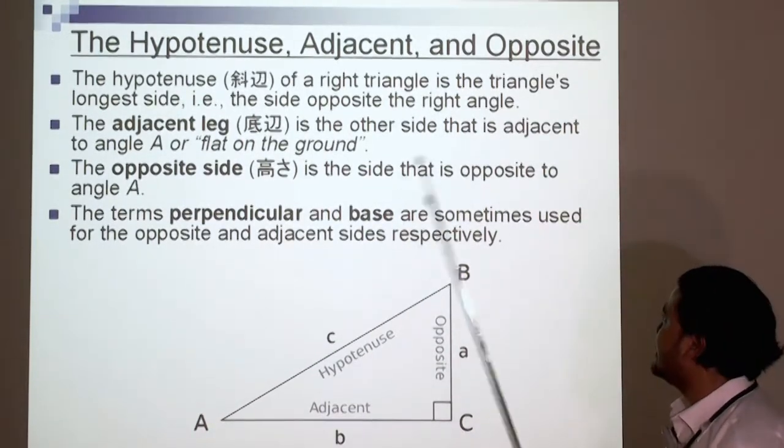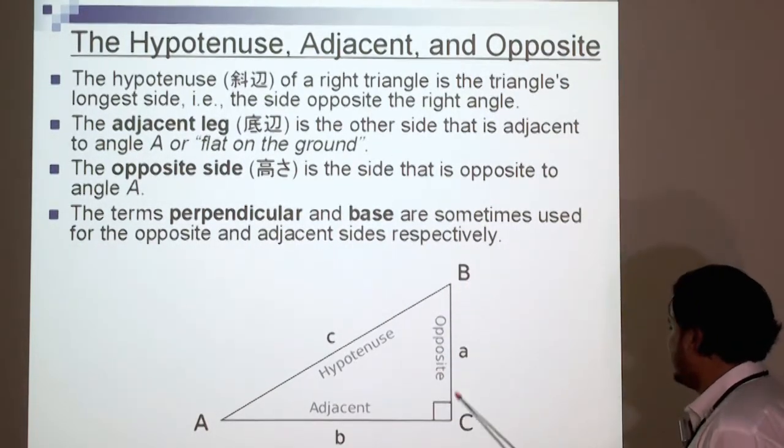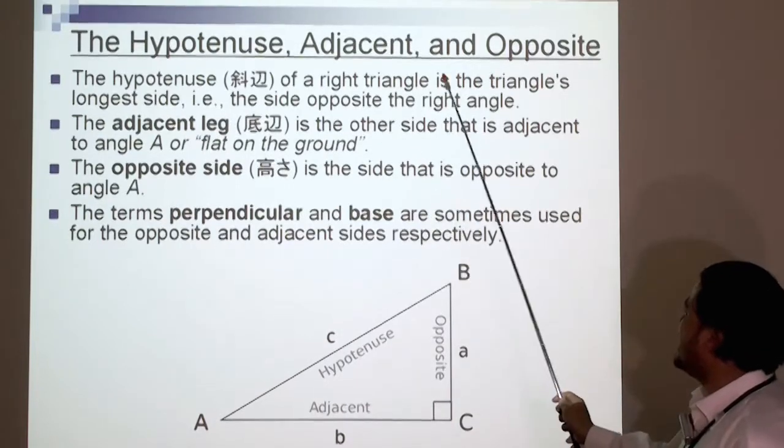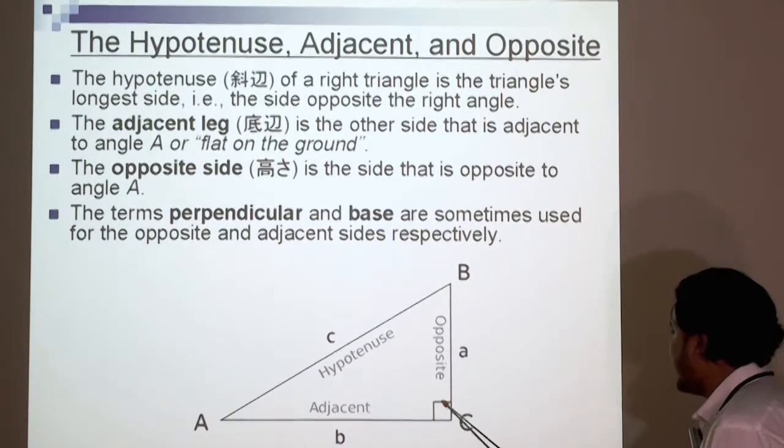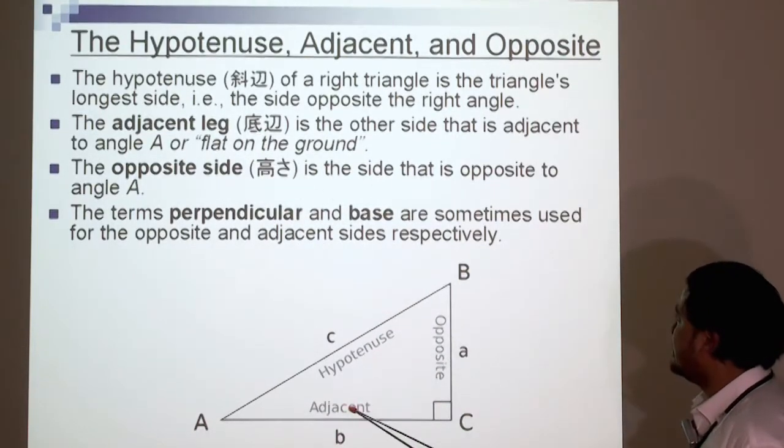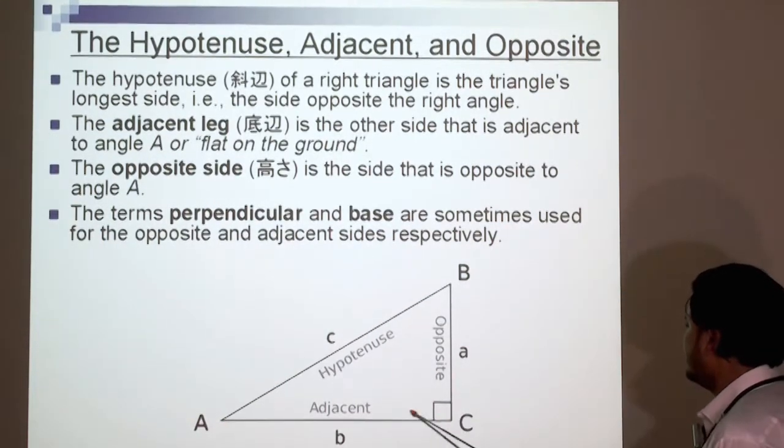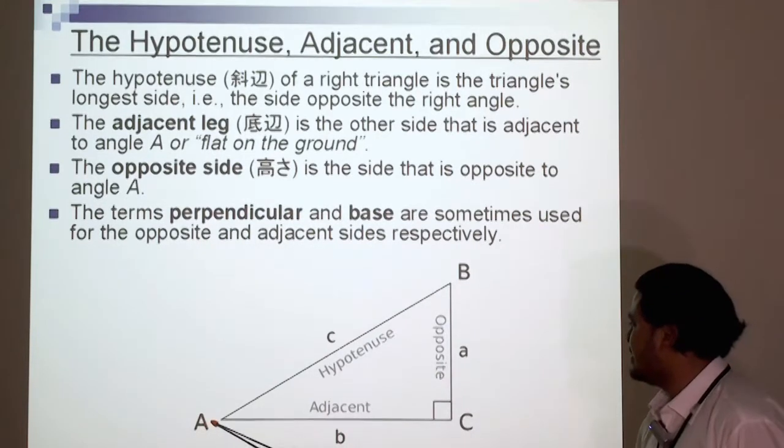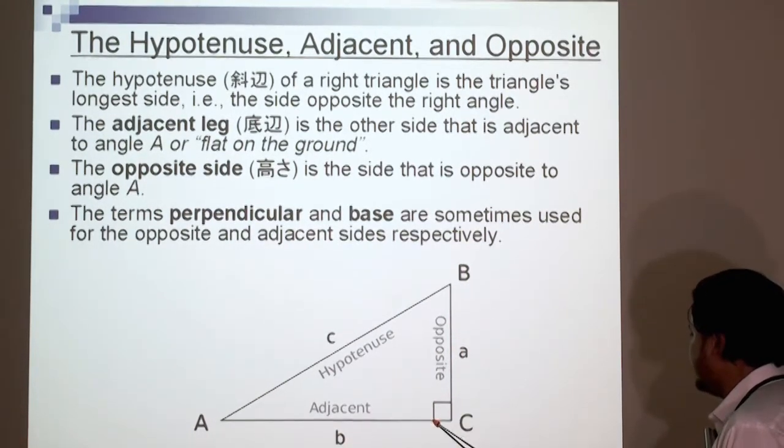I'm sure a lot of you are familiar with this. The hypotenuse, the adjacent, and opposite. These terms are used especially for the right angle triangle. What exactly is a hypotenuse? The hypotenuse of a right angle triangle is the triangle's longest side. It's the side across the right angle on the other side. The adjacent leg is the other side that is adjacent to angle A, or flat on the ground. The opposite side is the side that is opposite to angle A. That's angle A here, and this is the opposite, the vertical line to the 90 degree angle.